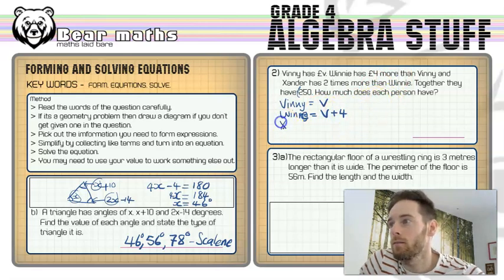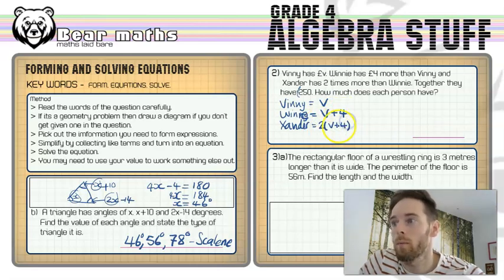Now, Winny has got 4 pound more. So Winny has got v pounds, but 4 more. So v plus 4 pounds. And then Zander has got 2 times more than what Winny's got. So 2 lots of this, 2 v plus 4s. So that's going to be 2 times v plus 4. We're popping that v plus 4 in some brackets and then we're going to multiply it out to find out the expression for Zander. So that would be 2v plus 8.